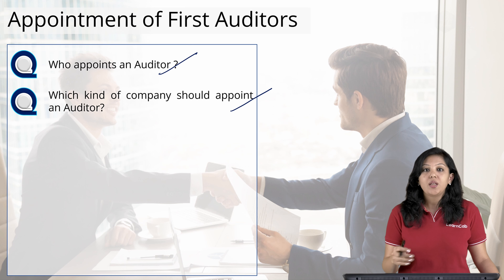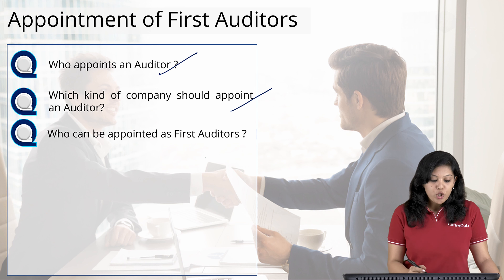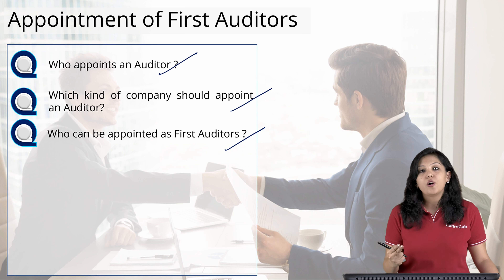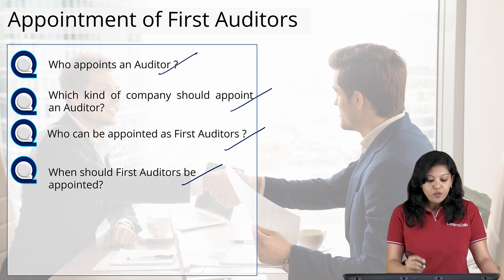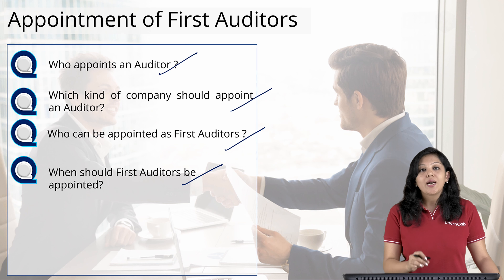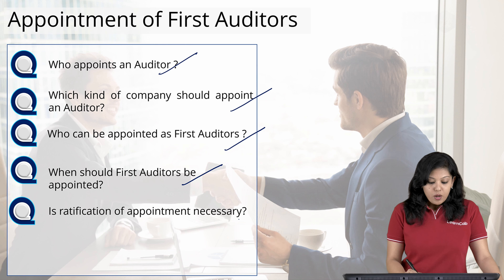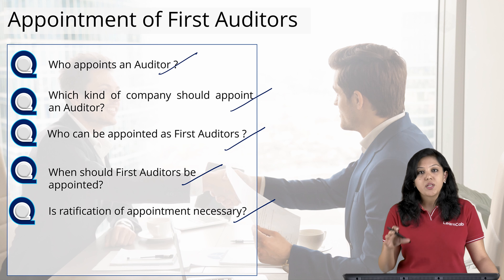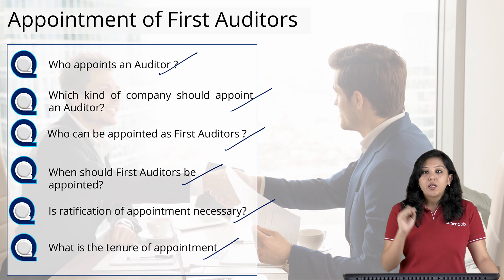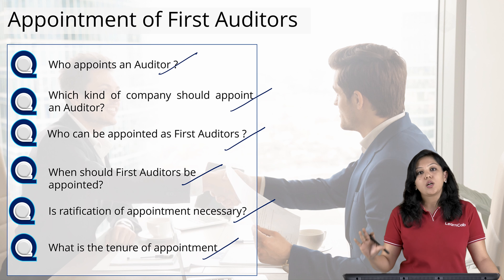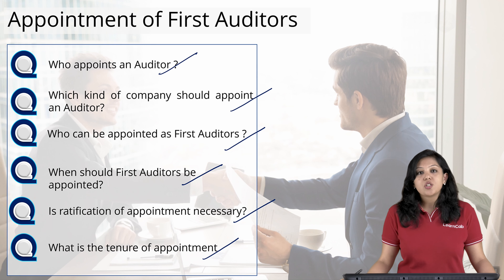To summarize what you learned in this video: who appoints an auditor — as per Section 139, it is in the AGM, but initially the Board of Directors appoints within 30 days of registration. Which companies — all kinds except government companies, for which separate rules apply. Who can be appointed — an individual practicing CA or a firm where the majority of partners practice in India. When — within 30 days of registration. Is ratification necessary — yes, shareholders approve by ordinary resolution at the first AGM. What is the tenure — from conclusion of first AGM to conclusion of sixth AGM.